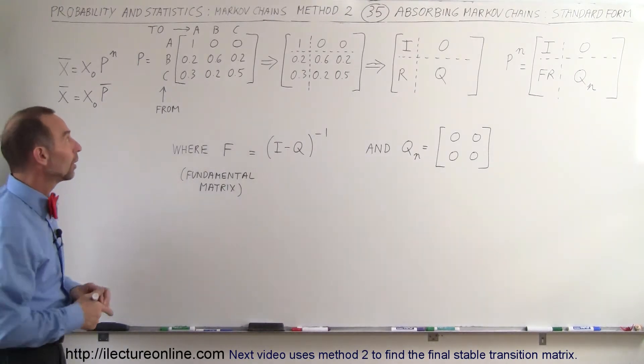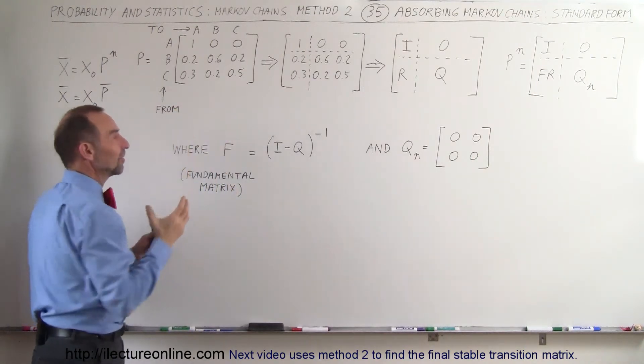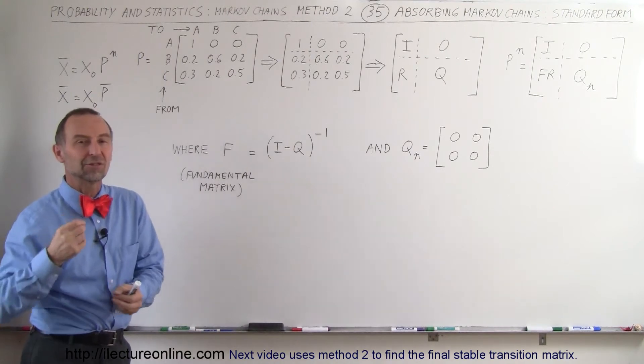What does that mean? An absorbing Markov chain is a situation where one of the states ends up absorbing all of the population and the other states end up with zero population.